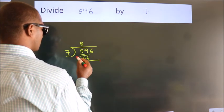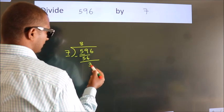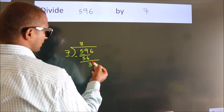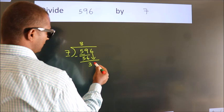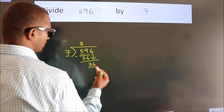Now we should subtract. We get 3. After this bring down the beside number. So 6 down. So 36.